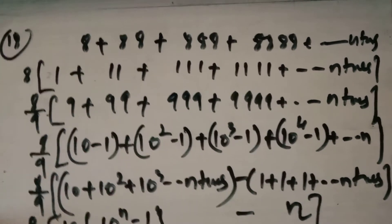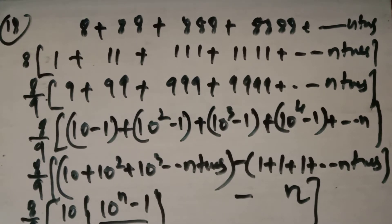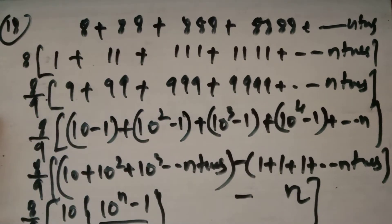This is the fixed type of question for special sequences. Many similar questions appear in the miscellaneous exercise. The method is: take the repeating digit as common, multiply and divide by 9, then convert into a GP by writing 9 as (10-1), 99 as (100-1), and so on.